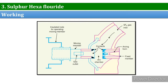Since SF6 is an electronegative gas, it readily gains electrons. After the breaker operation, the valve is closed by the action of a set of springs. SF6 circuit breakers are nowadays widely used in transmission systems and different industries, as their performance is quite good and economical.